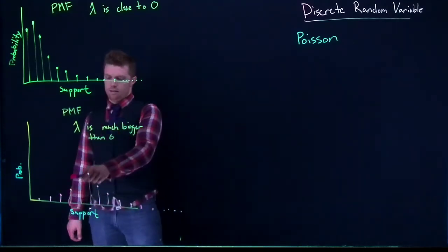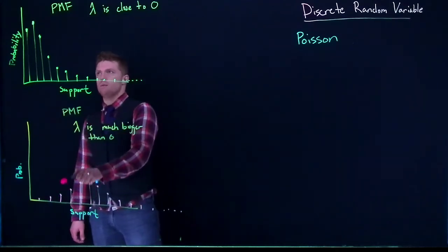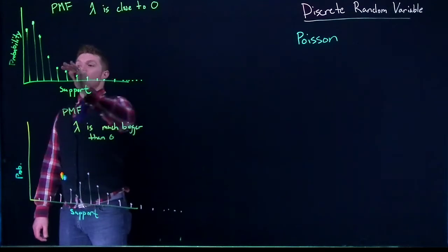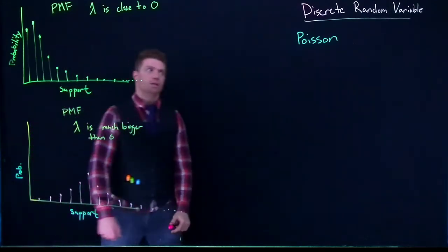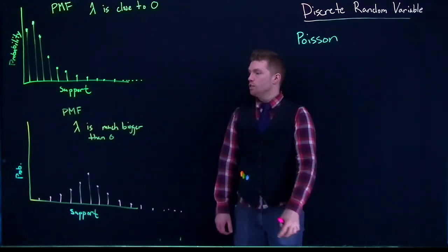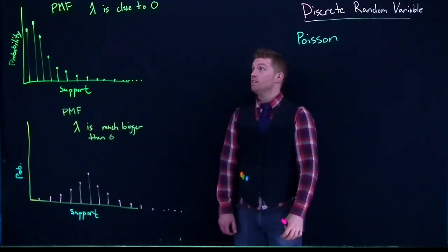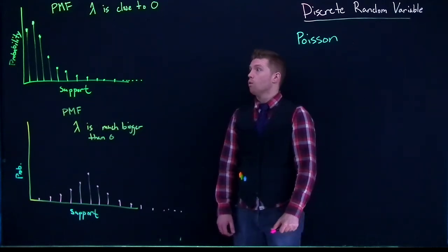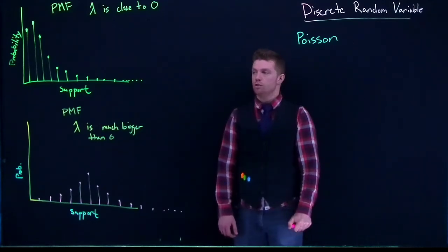So we've got this kind of bell-ish shape here. And you can kind of see how this is trying to be bell-shaped, but it gets slammed up that bottom value of zero. So that is basically how the shapes, how we can see them in our PMFs for our Poisson distributions.